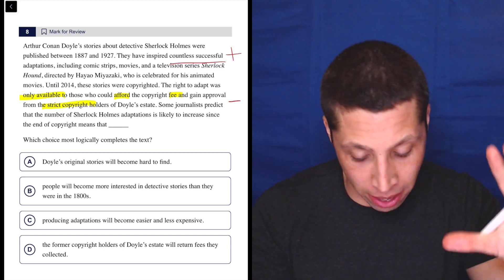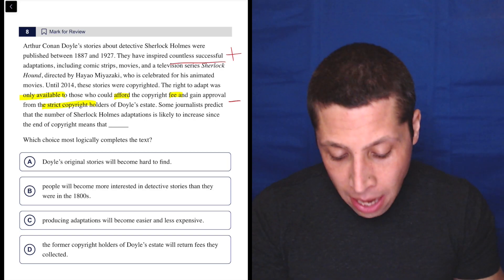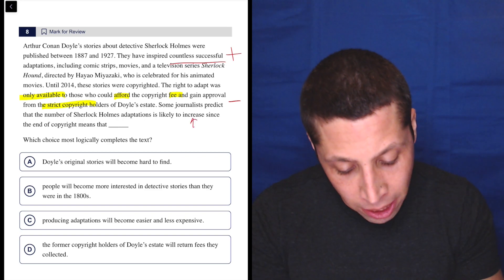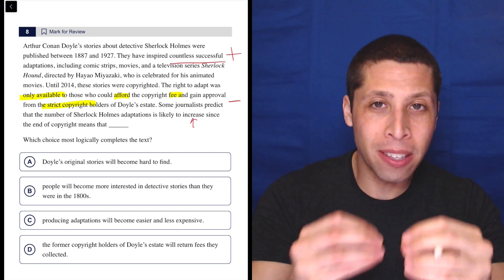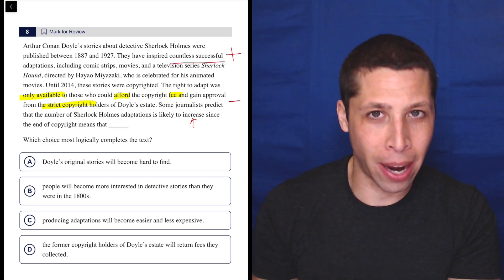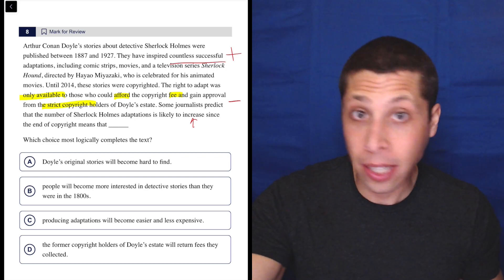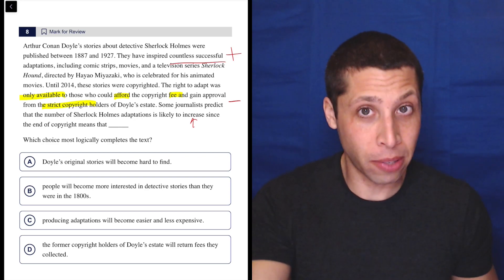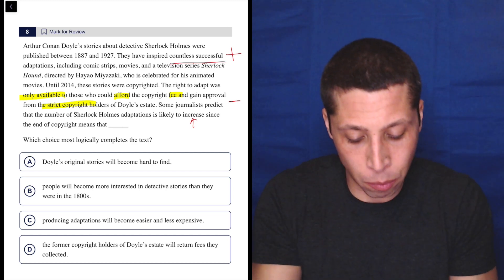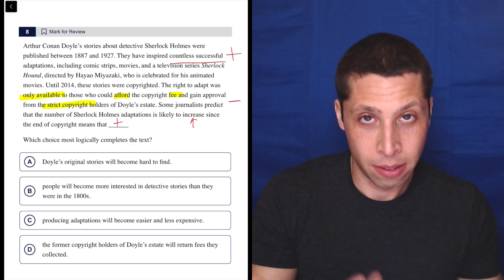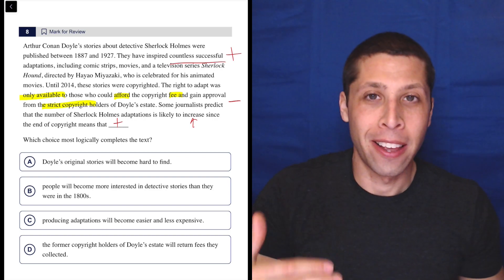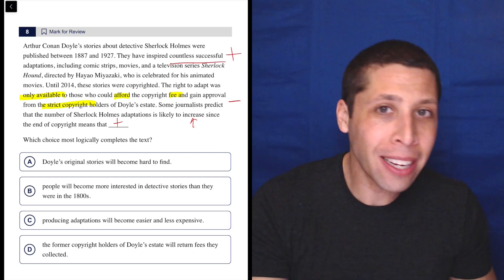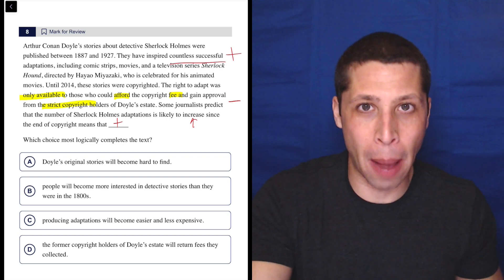Something shifted there. Some journalists predict that the number of Sherlock Holmes adaptations is likely to increase since the end of copyright means that... So why was the negative there? The negative was there because of the copyright. Now that the copyright is gone, it's past 2014, seems like it'll increase. So we want something good here. Basically, the copyright held it back, so now they're going to increase because there's no copyright. Let's see.